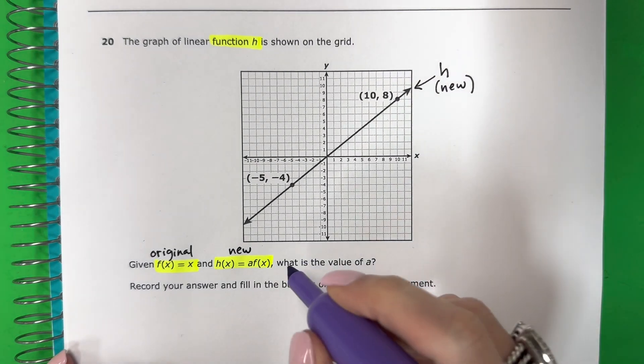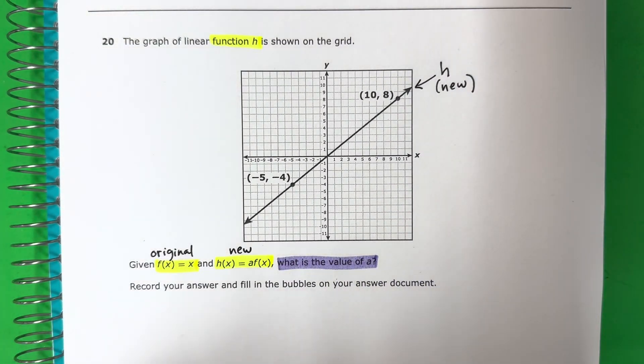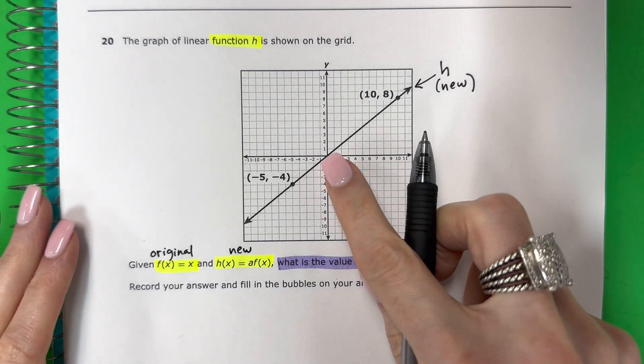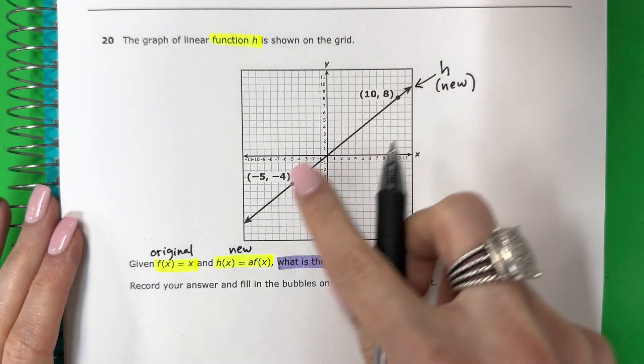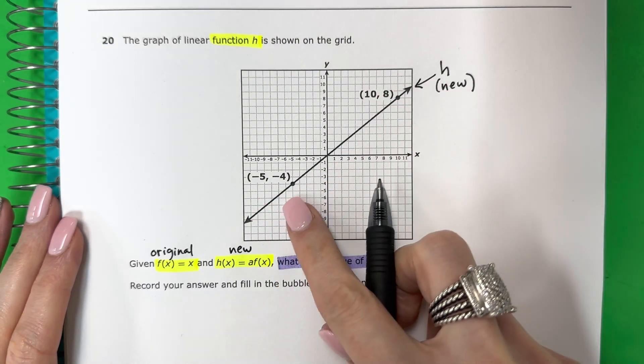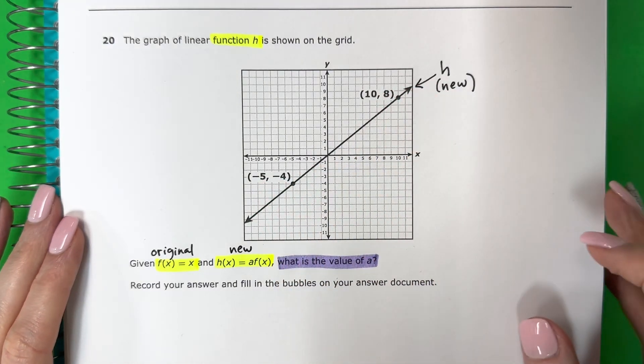And we want to know what is the value of a? Okay. ¿Qué es a? ¿Cuál es el valor de a? So let me go ahead and show you how to do that. So don't look at the line. I want you to look at the numbers. No mira a la línea. Solo mira a los números.